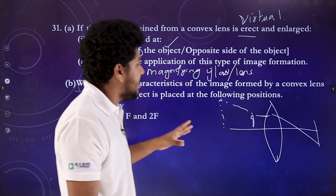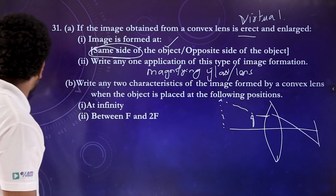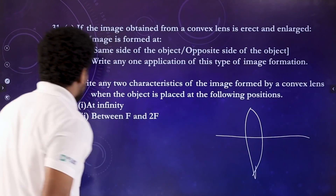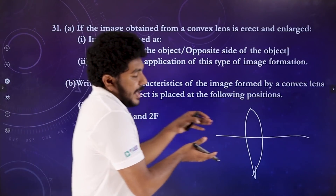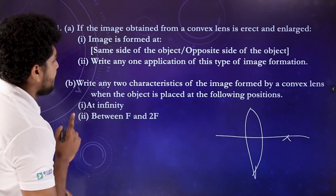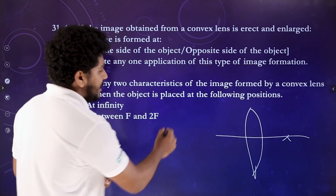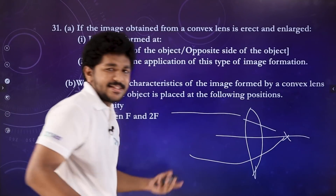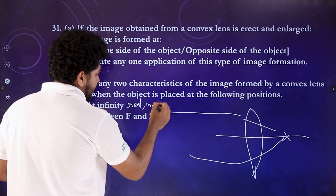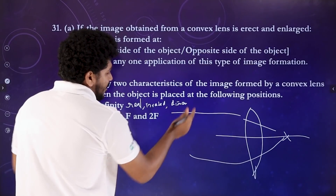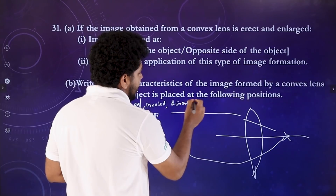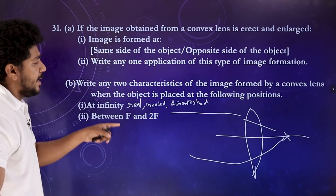Write any two characteristics of the image formed by a convex lens when the object is placed at different positions. When an object is placed at infinity, the image forms at the focus — it is inverted and diminished, forming a very small image.